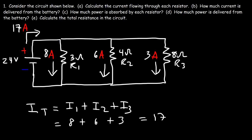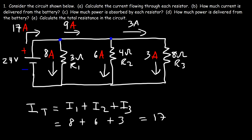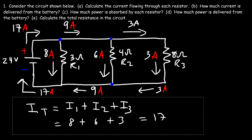According to Kirchhoff's current law, the current that enters a junction equals the current that leaves it. We have 17 amps entering — so 17 amps must leave. 8 amps went down through R1, meaning the other 9 amps flows through the next section of wire. At the next junction, 9 amps enters: 6 amps flows downward through R2, so 3 amps flows through R3. Those 3 amps meet back up with the 6 amps, giving 9 amps, which then meets the 8 amps, and 17 amps flows back to the battery. This gives a clear visual illustration of how current flows in a parallel circuit.